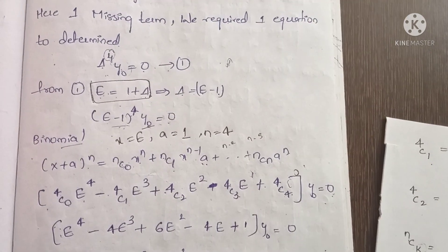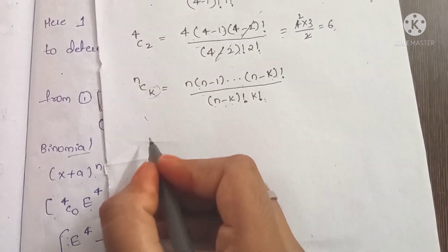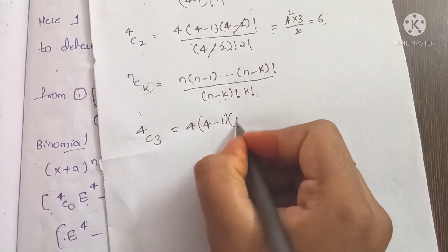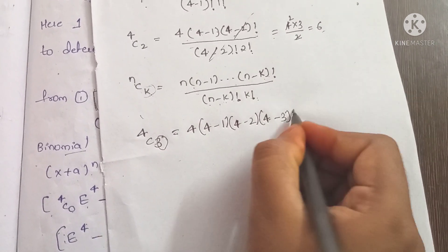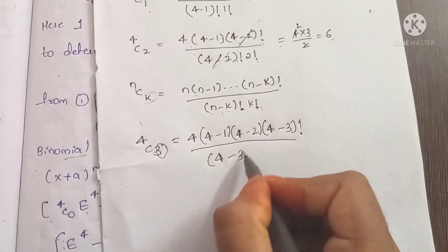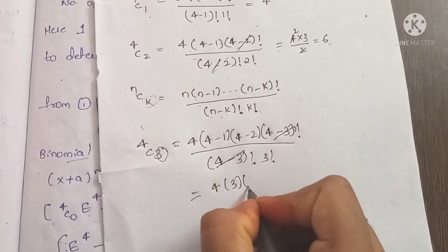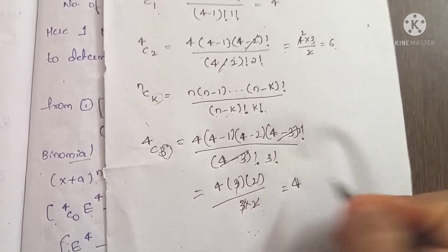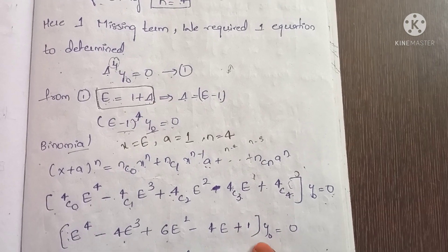Computing the binomial coefficients: 4c1 equals 4; 4c2 equals 4 into 3 divided by 2 equals 6; 4c3: 4 into 3 into 2 divided by 3 factorial equals 4; 4c4 equals 1. So the expansion gives: E^4 y0 minus 4 E^3 y0 plus 6 E^2 y0 minus 4 E y0 plus y0 equals 0.